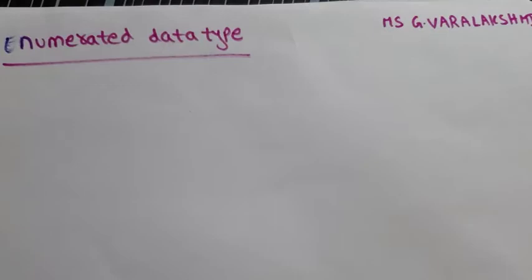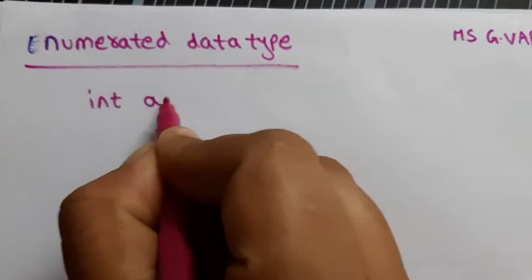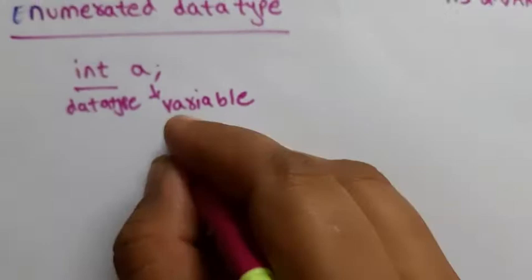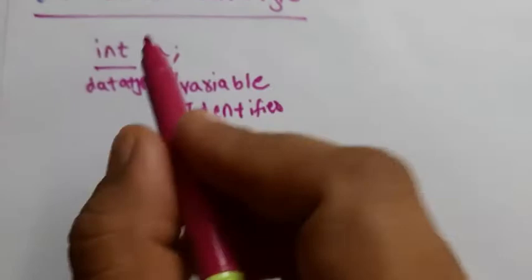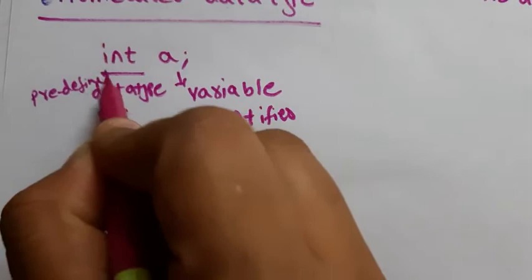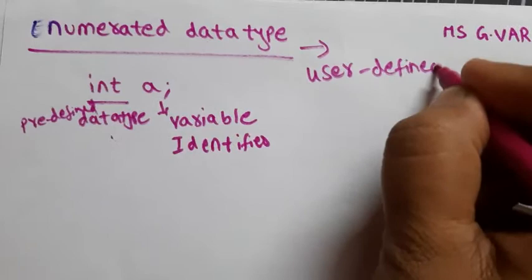Let us discuss a concept called enumerated data types. Generally, comparing with int: int is a predefined data type, and 'a' is a variable or identifier. Enumerated data type is not predefined — it is a user-defined data type. You have the scope to define your own data type, so enumerated data type falls under the user-defined category.